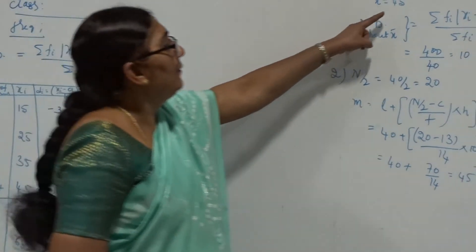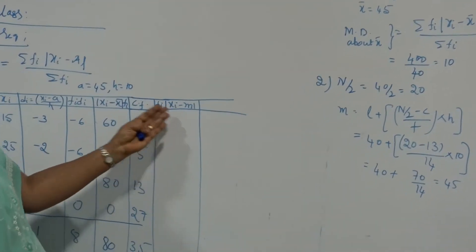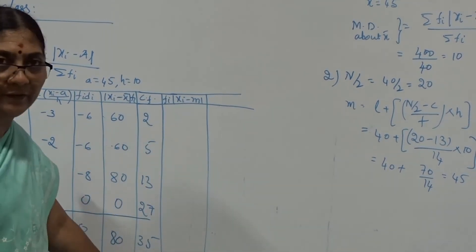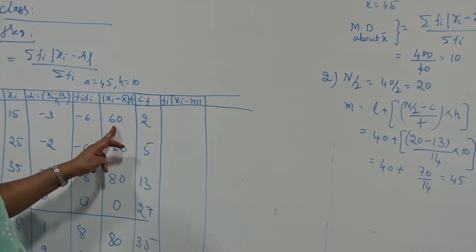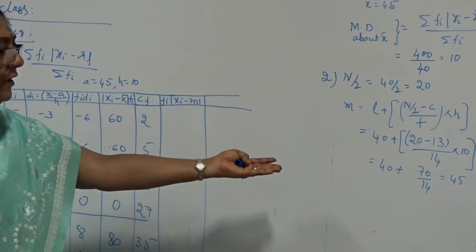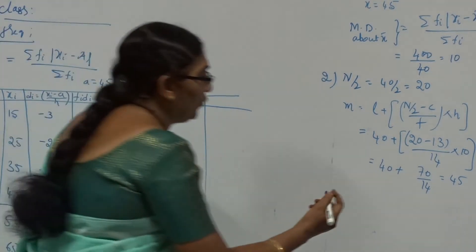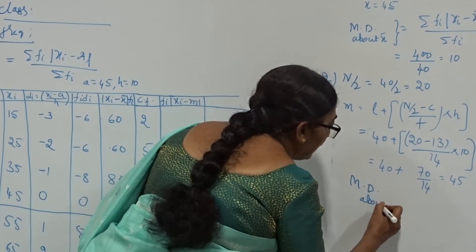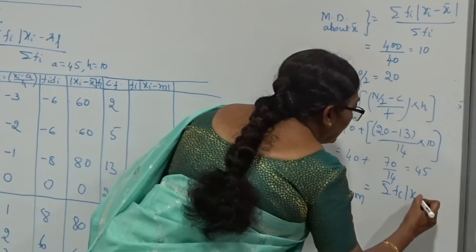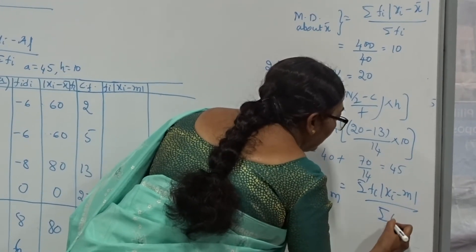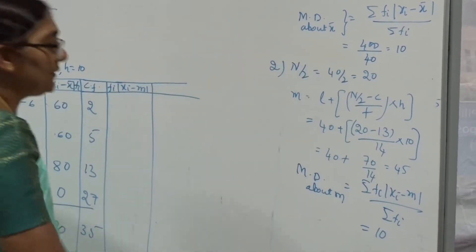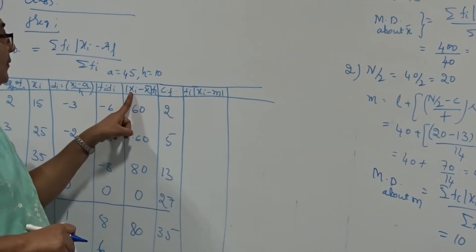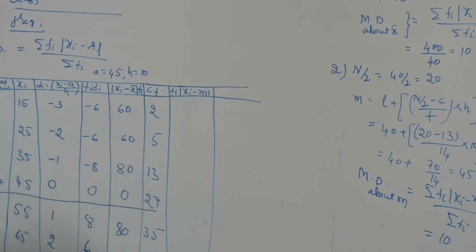Here the median is also 45, the same as the mean. Therefore, it is not necessary to recalculate the column fi × |xi − median|, because we observe the same column values: 60, 60, 80, 0, 80, 60, 60 — identical to what we computed for the mean. We get the same absolute differences. Therefore, mean deviation about the median = sigma fi × |xi − M| / total frequency = 400/40 = 10.